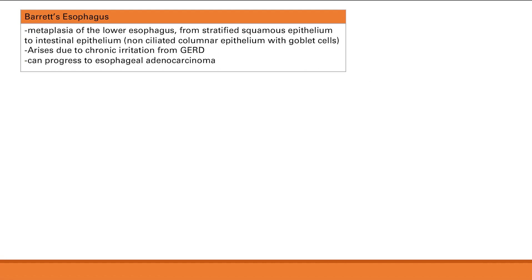Barrett's esophagus is a metaplasia of the lower esophagus. Normally the lower esophagus has stratified squamous epithelium, but with metaplasia it becomes intestinal-type epithelium — non-ciliated columnar epithelium with goblet cells. Seeing this in the esophagus is abnormal. It arises from chronic irritation, usually GERD, where acid causes inflammation and metaplasia in the lower esophagus. We care about this because it can progress to esophageal adenocarcinoma.